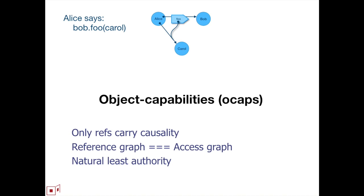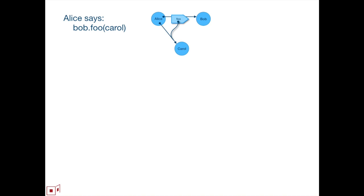Let's focus on the object capability layer. The key transaction is the message send where object Alice invokes object Bob passing a reference to Carol. Alice is exercising her capability to Bob, provoking whatever behavior results, and simultaneously giving Bob permission to invoke Carol — whereas previously he didn't have it. In the object capability model, only these references carry causality; there's no other causal channel. The reference graph from the programming language literature is identical to the access graph.